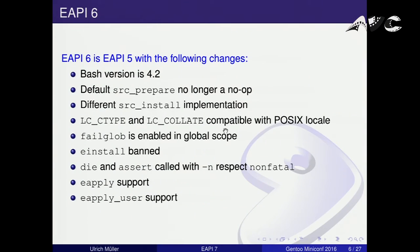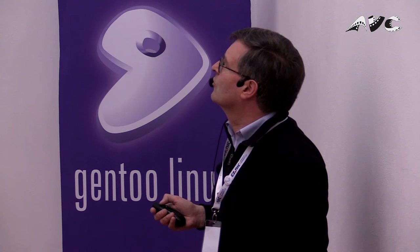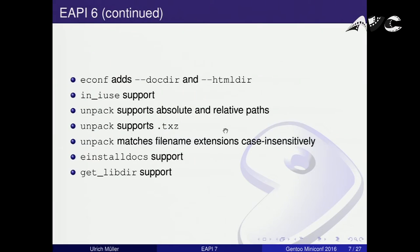Let's go back to eAPI 6. We increased the bash version to 4.2 finally, and there were a lot of features. One important feature is eApply support, which is a substitute for ePatch. Now we require every eBuild to call the eApply user function in src_prepare, making it easy to apply user patches. Another important feature is eInstallDocs support — called by the default src_install — which installs documentation files by specifying them in a variable.